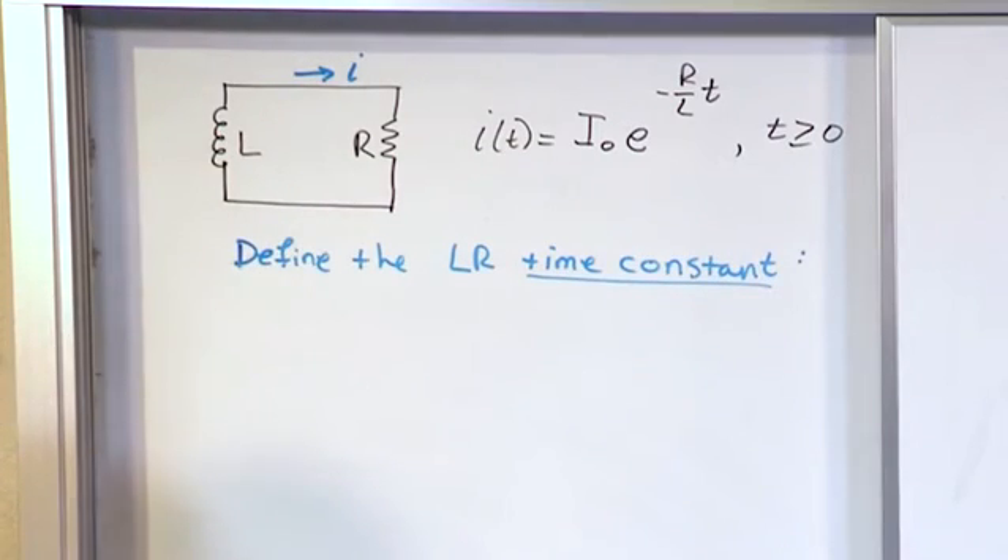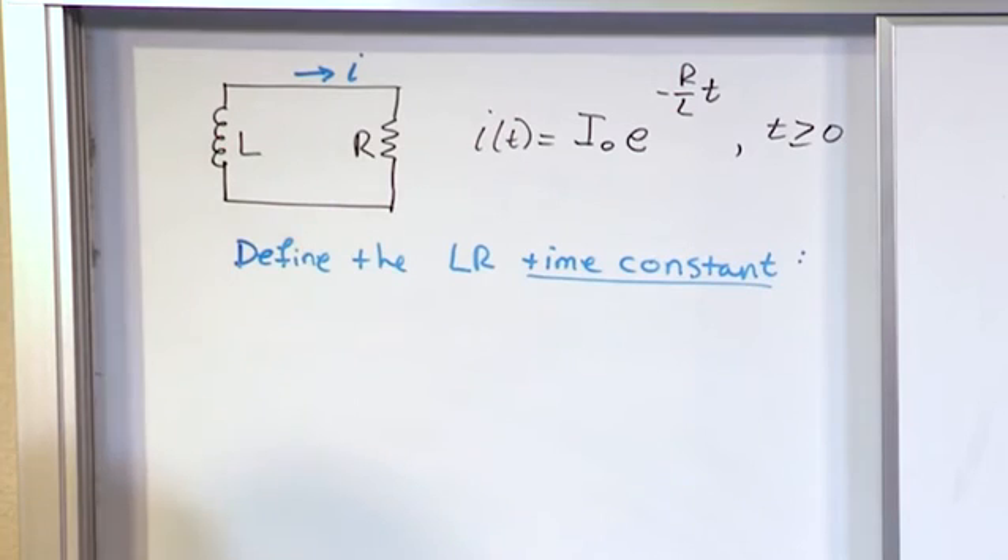What we're going to do is define the LR time constant. The concept of a time constant is something you're definitely going to see in circuit analysis, so kind of get used to it. It's a very easy thing to understand if it's explained in the right way. We're going to define the time constant as the Greek letter tau. It's a T but it's got like a squiggle for the top of the T.